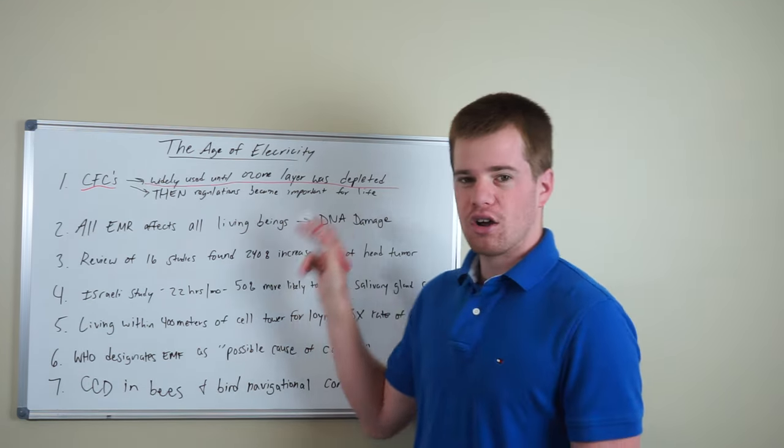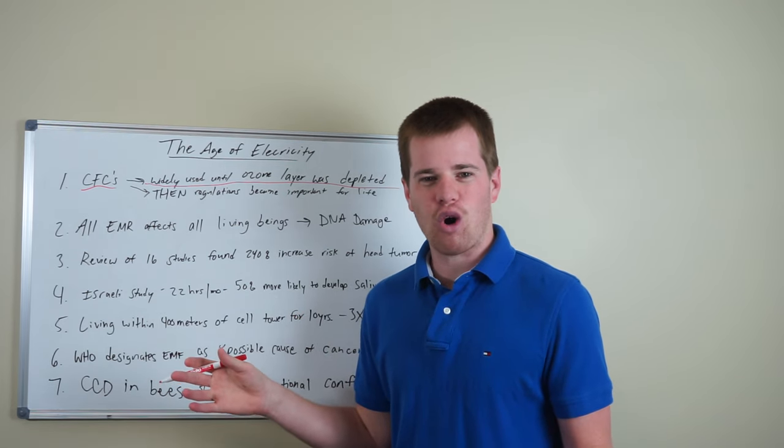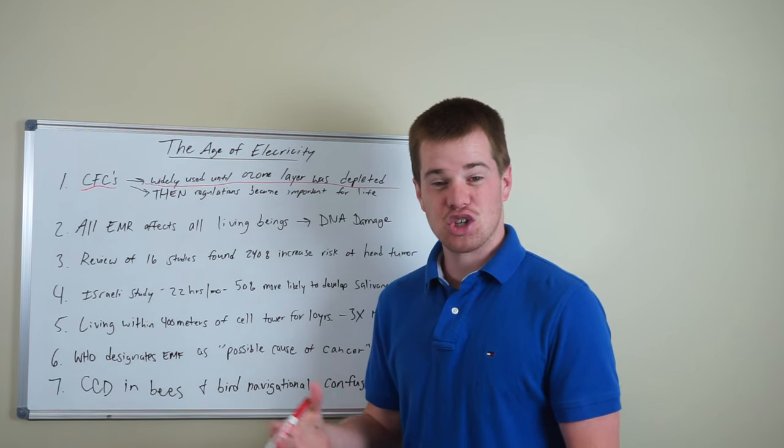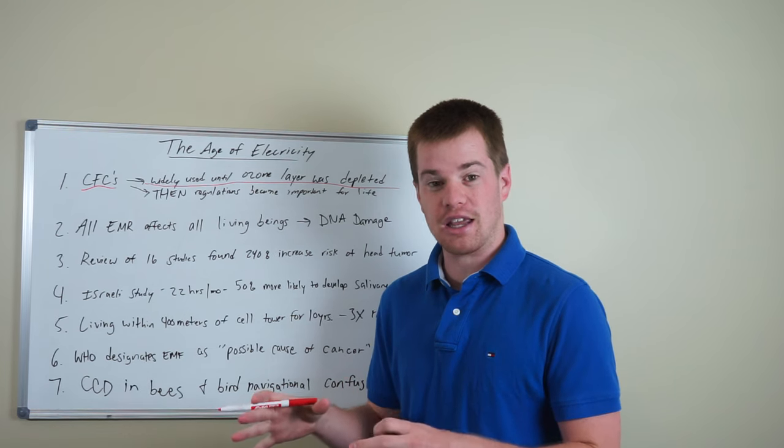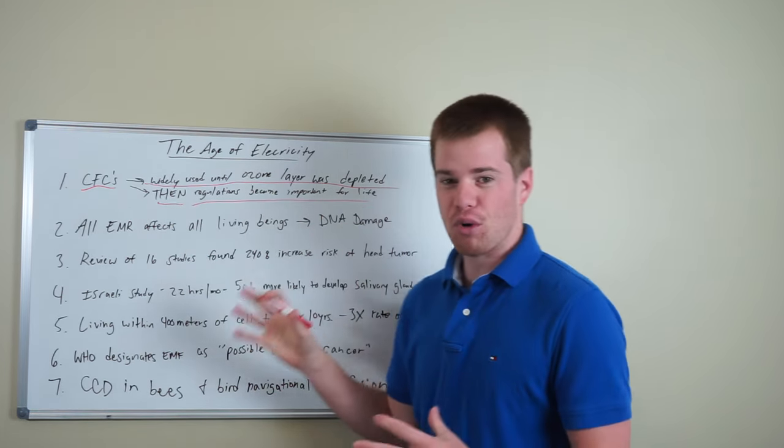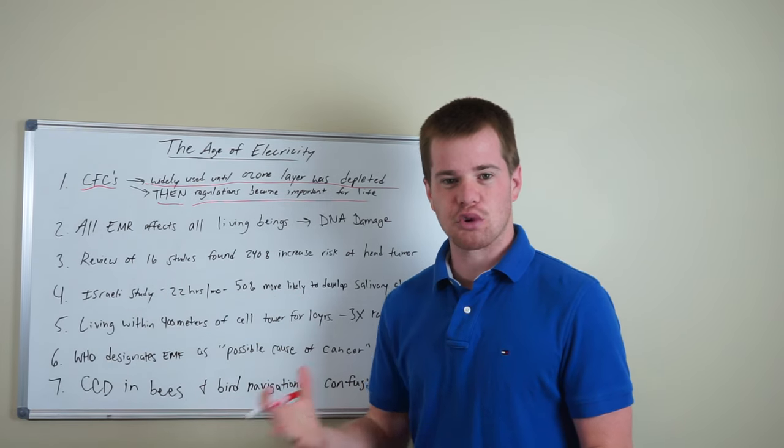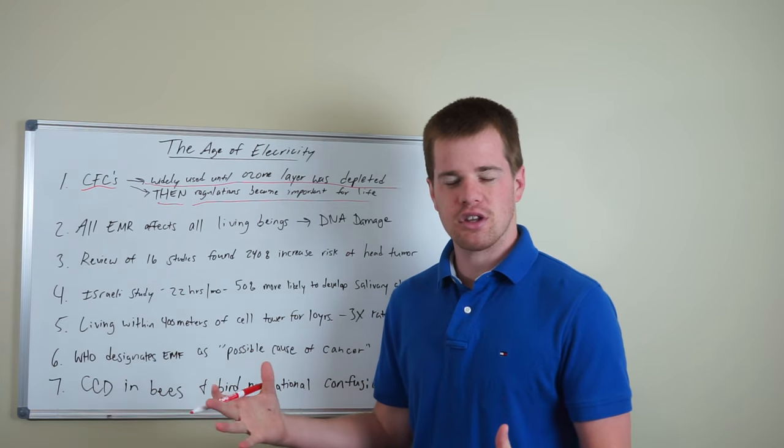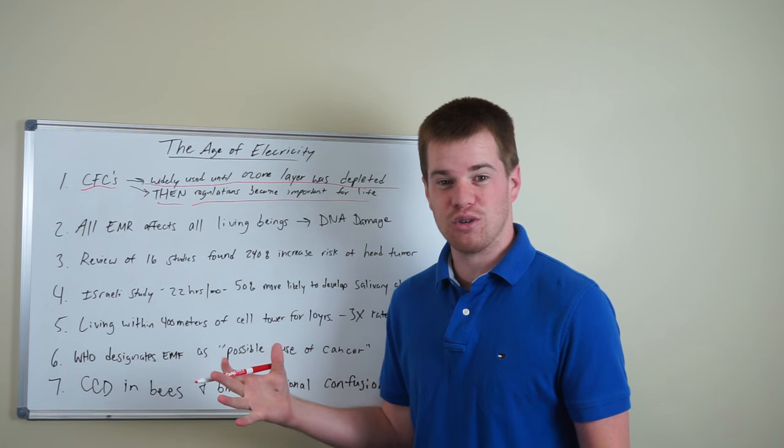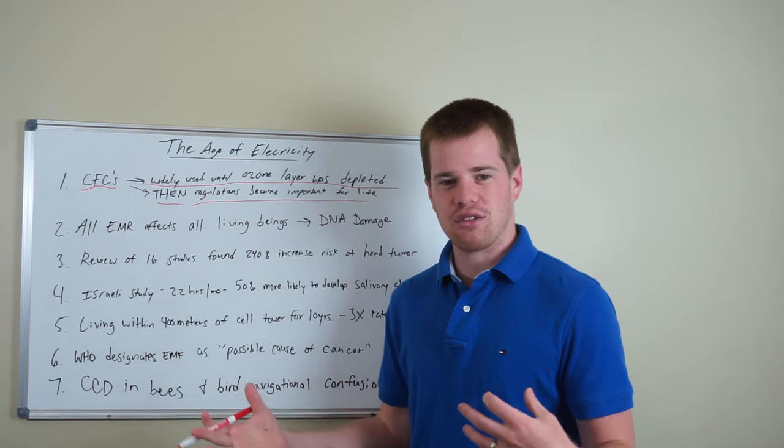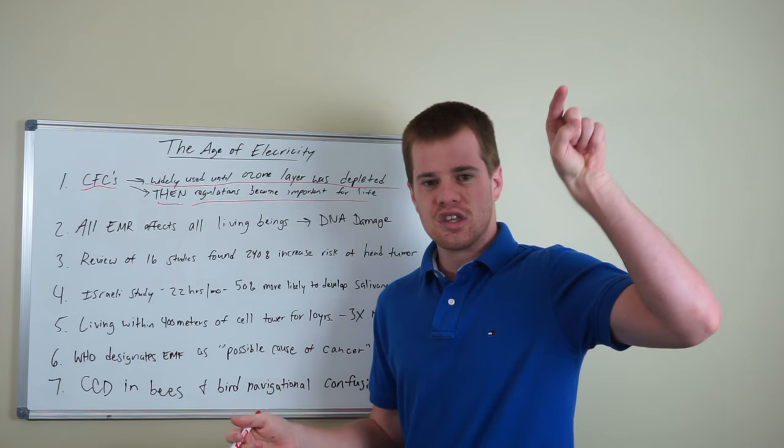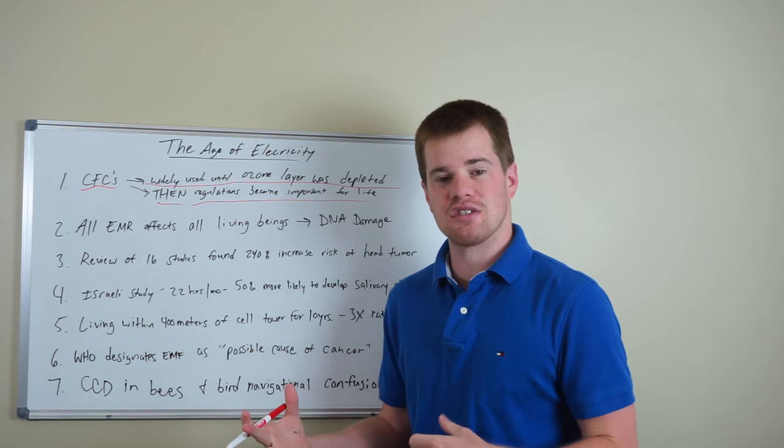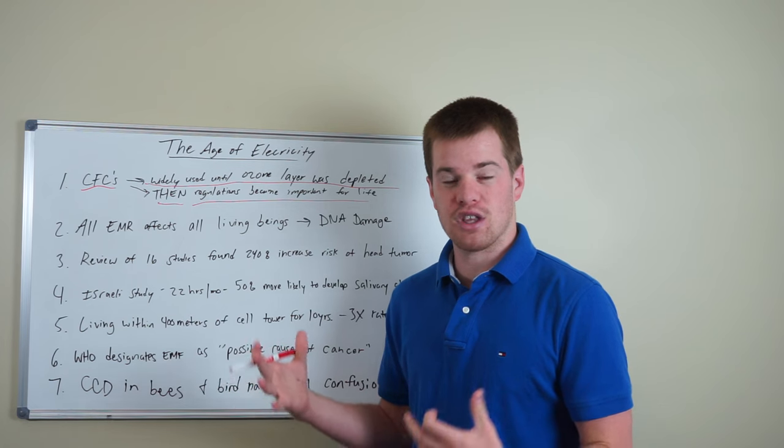Then we realized we've created a massive hole in the ozone layer of our planet that is required to protect us and ensure that life can be sustained on this planet. Then regulations became important. This is when we created the Montreal Protocol. That's when all the countries around the world contributing to the depletion of the ozone layer said, we cannot do this anymore. This is not good. So now if you look at the charts online of the CFCs, you see that we're really starting to phase these out. However, third world countries and developing countries are still using these CFCs and contributing to the depletion of the ozone layer.